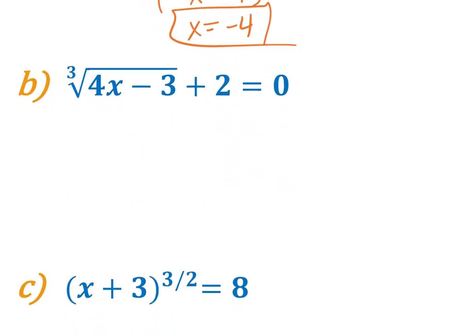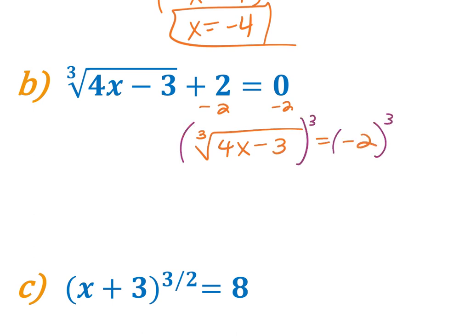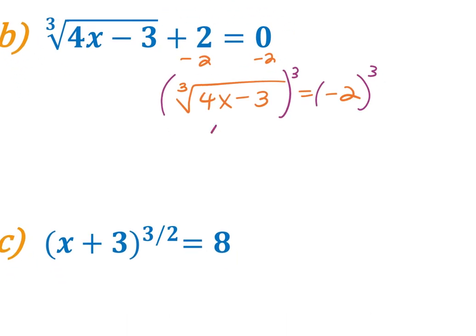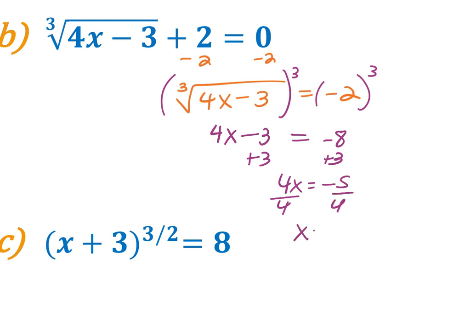For (b), it's a cube root: isolate by subtracting 2, then cube both sides. This gives 4x − 3 = (−2)³ = −8. Adding 3: 4x = −5, so x = −5/4. Because it has an odd root, you don't need to check for extraneous roots — you can check to verify your arithmetic, but odd roots can handle positive and negative values so no extraneous issue arises.